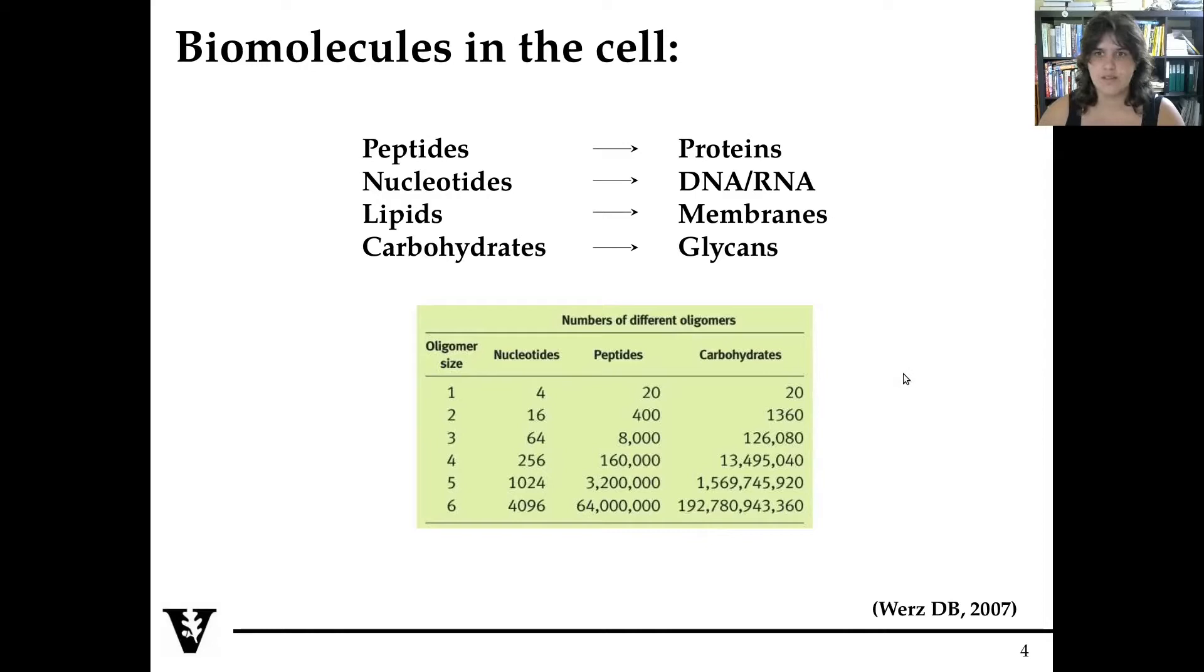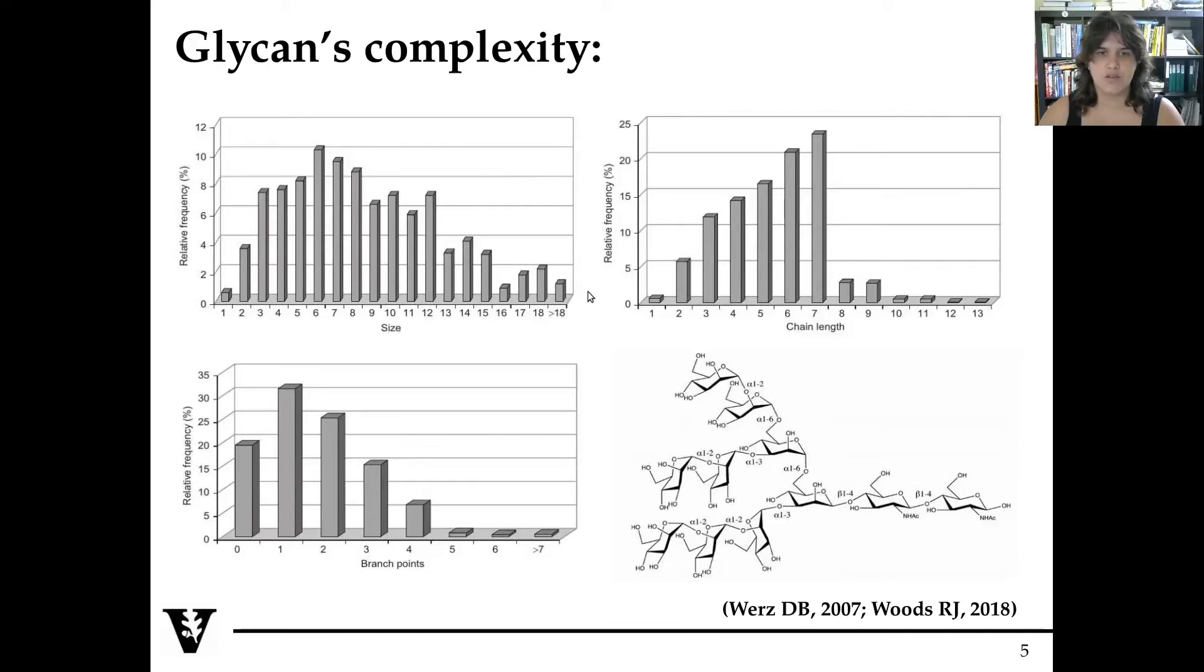This is not the only complexity bound to glycans. The size also plays a role. In nature was recorded a glycan chain that contains 35 sugar rings. The length of the chain without branching can go up to 13 rings. And then there is the branching point that is mostly in the first portion of the glycan, but we can have also multiple branching points in the same glycan chain. This increases a lot the complexity of glycans over proteins or DNA.